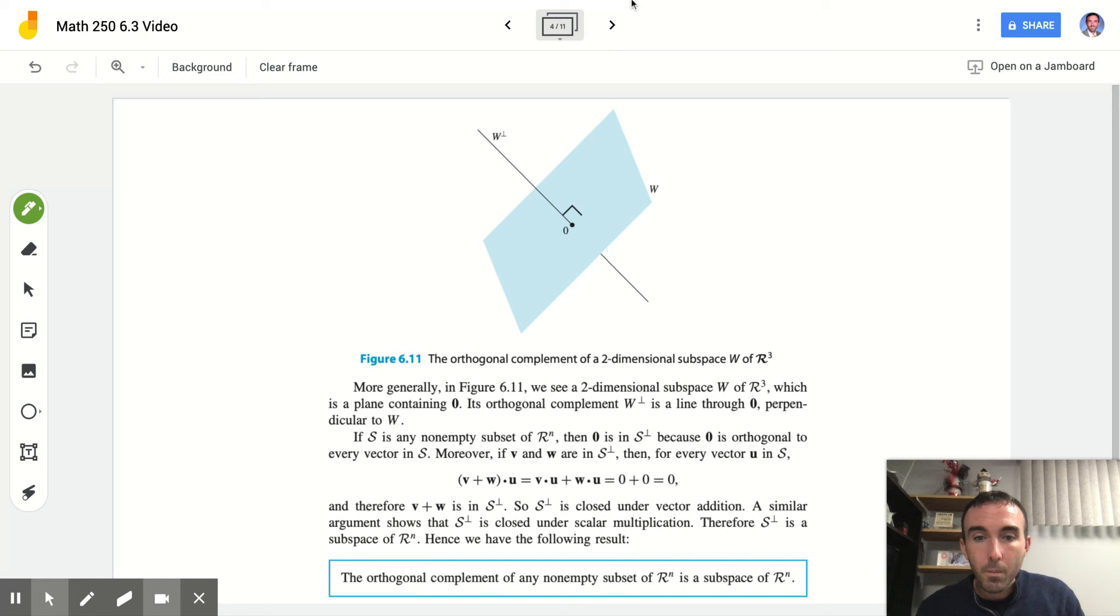Here's just another illustration to show you an orthogonal complement of a two-dimensional subspace W of R^3. More generally, in this figure, we see a two-dimensional subspace W of R^3, which is a plane containing 0. Its orthogonal complement is a line through 0, hence it is perpendicular. When we talk about orthogonal, we're always looking for perpendicular because these have great applications to minimizing distance and finding closest vectors and lines of best fit.